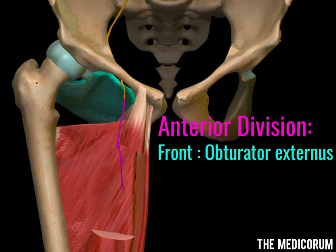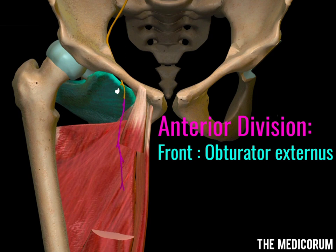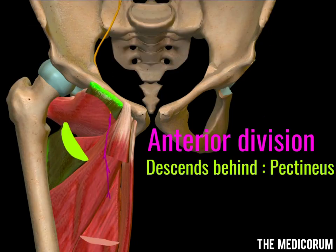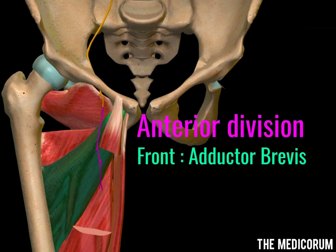The anterior division of the obturator nerve passes downwards, and as soon as it crosses the obturator canal, it passes in front of the obturator externus muscle. As the canal is covered by this muscle, it naturally passes in front of it. It then descends behind the pectineus muscle and comes in front of the adductor brevis.